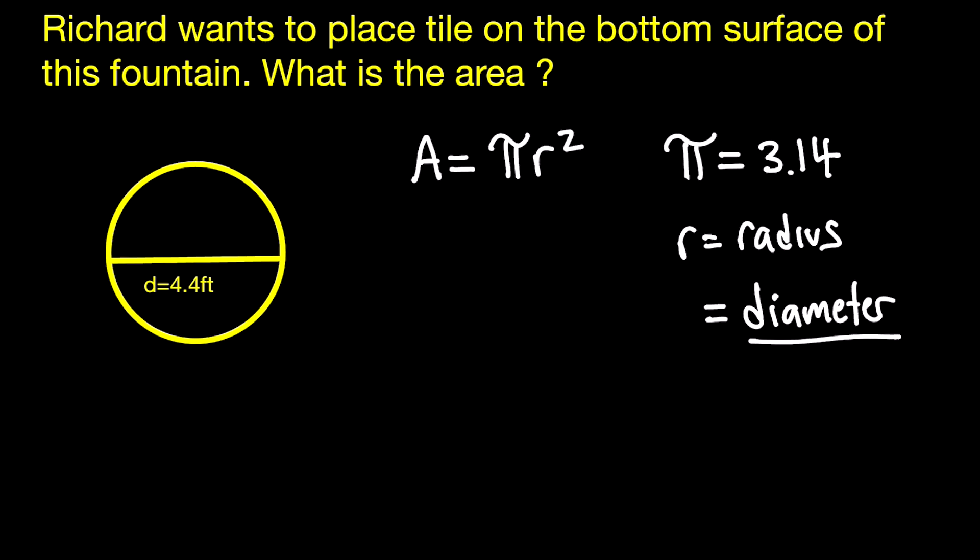So if you look back at the figure there on the left, it's telling you that the diameter is 4.4 feet. So in order to get the radius, you would simply divide by 2, that gives you 2.2.